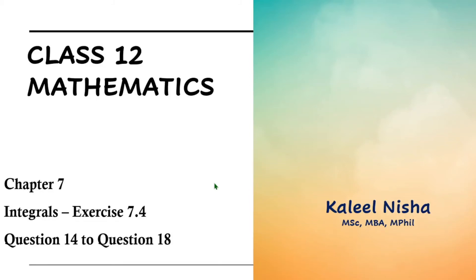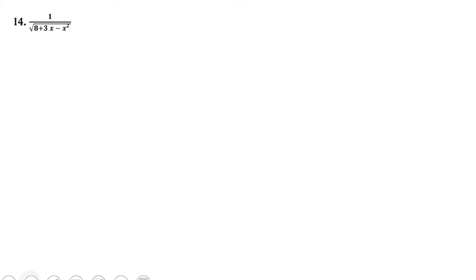In this video I will be solving questions 14 to 18 of Exercise 7.4, Chapter 7: Integrals. We have to find the integral of the given functions. Here the given function is 1 divided by the square root of 8 plus 3x minus x squared. So let us write I as the integral of dx divided by that expression; we have to bring this into the form square root of a squared minus x squared. So let me complete the square.